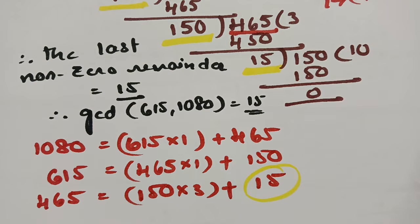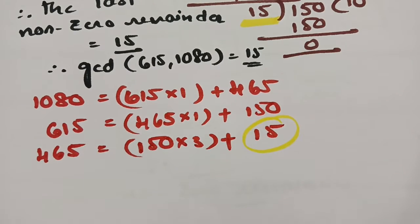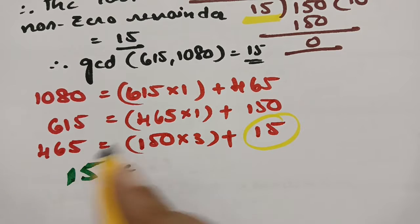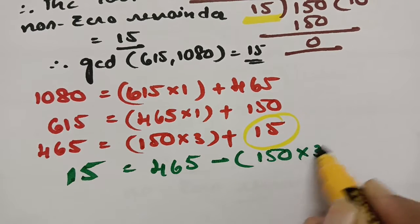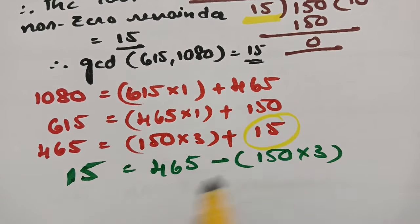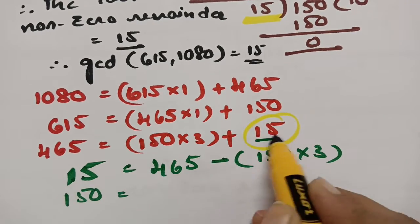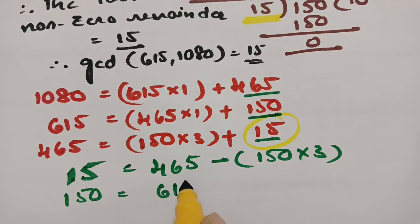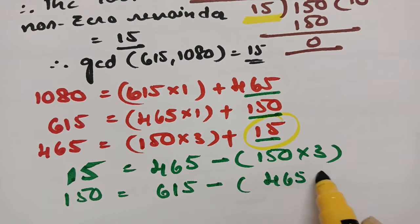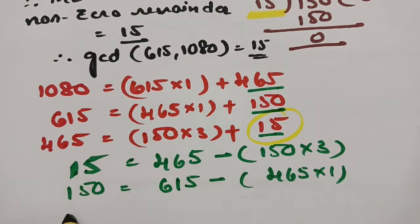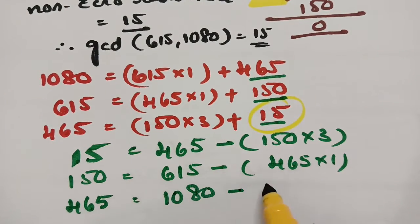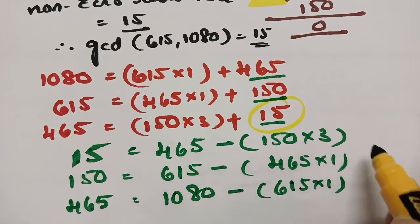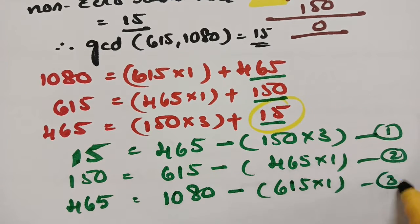From these three equations, I am transforming. What is the value of 15? From the third equation, 15 equals 465 minus 150 times 3. And 150 equals 615 minus 465 times 1. And 465 equals 1080 minus 615 times 1. These are equations 1, 2, and 3 from our calculations.